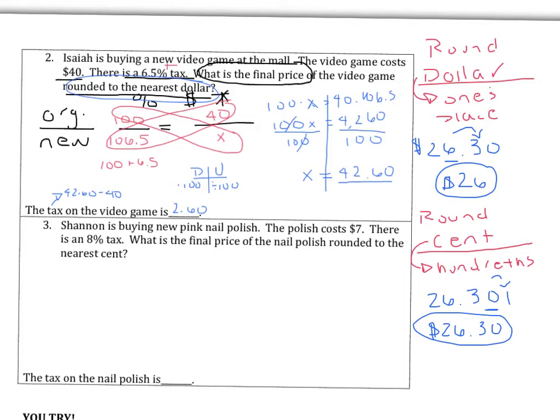Going back to question two, it asks us to round to the nearest dollar. Taking our $42.60, I underline the ones place — that's the 2 — and draw an arrow to the next digit, which is 6. Since 6 is greater than 4, my 2 rounds up to a 3, and everything after becomes zero. So the price of the video game, rounded to the nearest dollar, is $43.